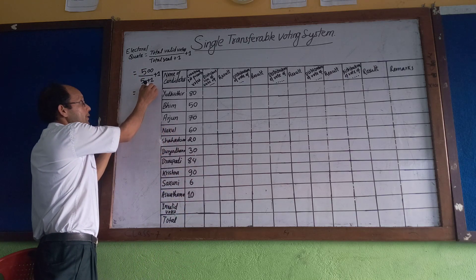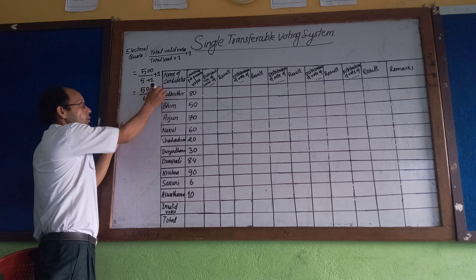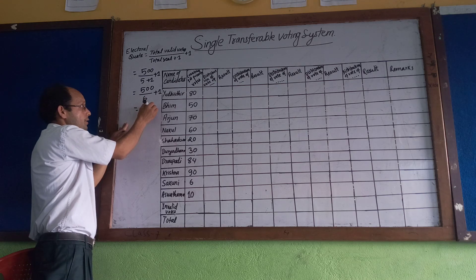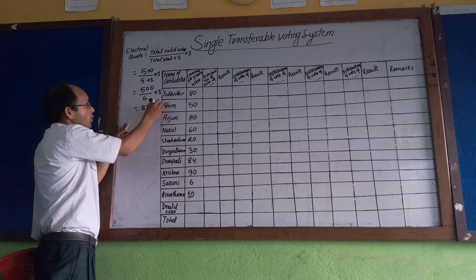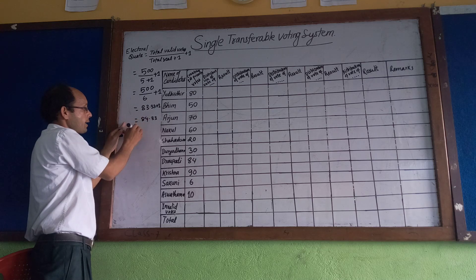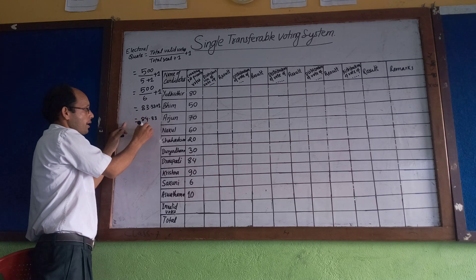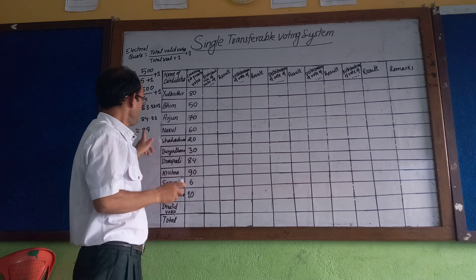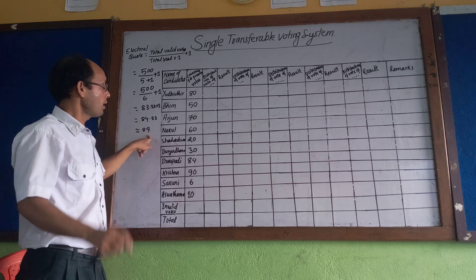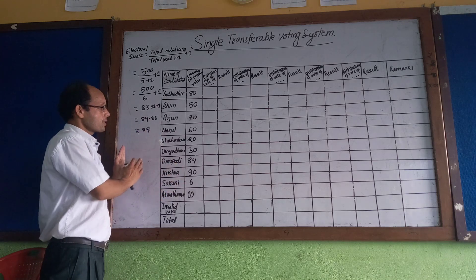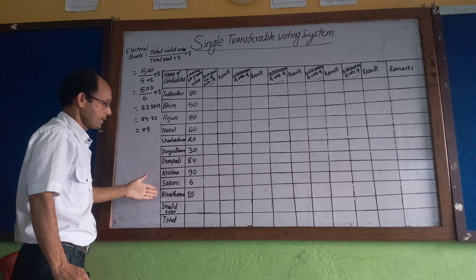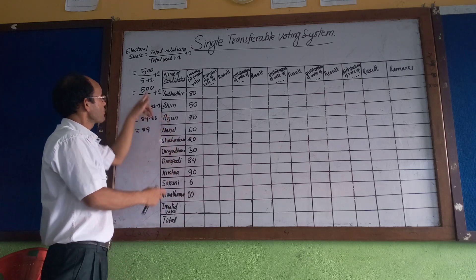Applying the formula: 500 divided by (5 plus 1), plus 1 equals 500 divided by 6, plus 1, which equals 84.33 plus 1, approximately 84. So 84 votes is the minimum required — the electoral quota — in order to be elected.